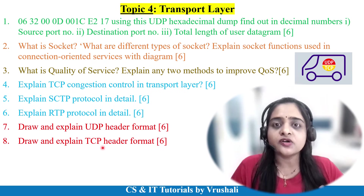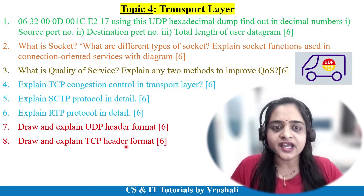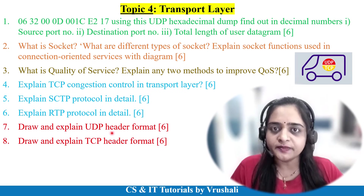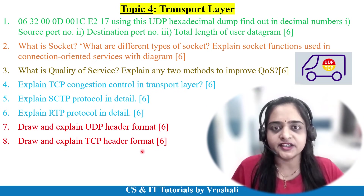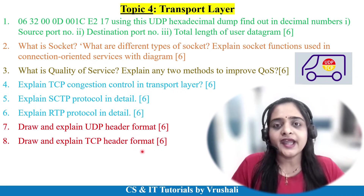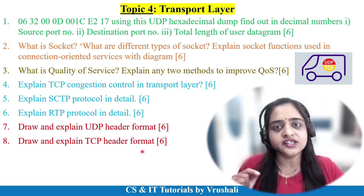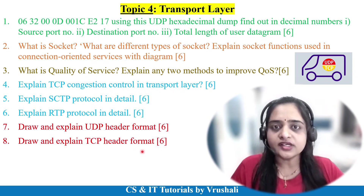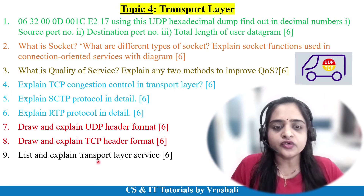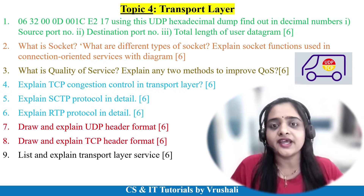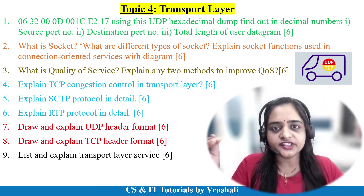The next questions are based on header formats — either UDP header format or TCP header format. Diagrams are compulsory; draw the header format diagram and explain each component point-wise for 6 marks. Also, list and explain transport layer services for 6 marks — explain any 4 features with a heading and at least 2 to 3 points each.